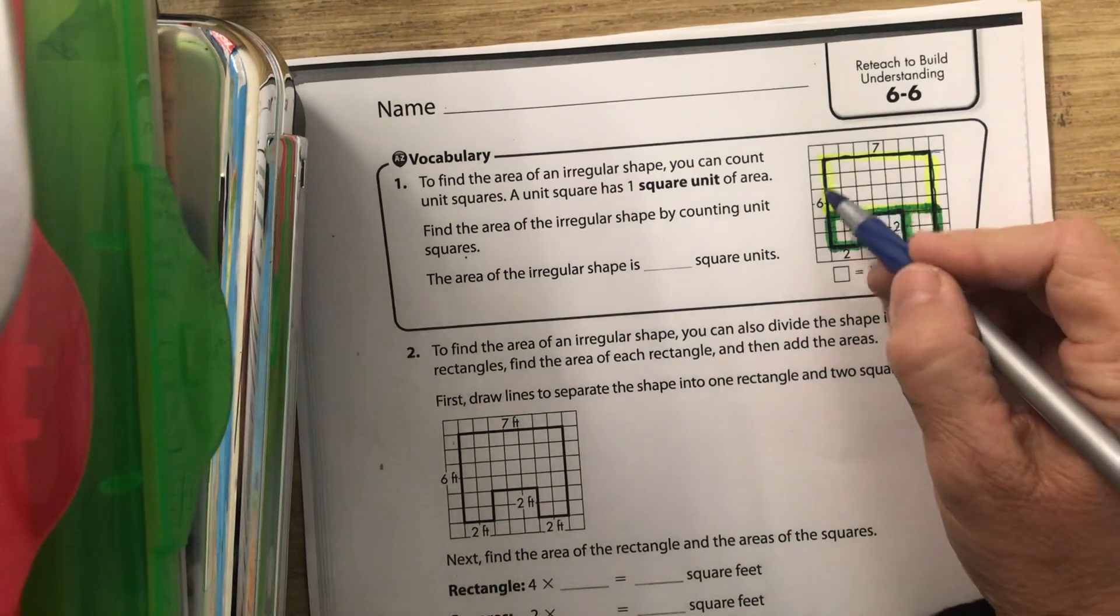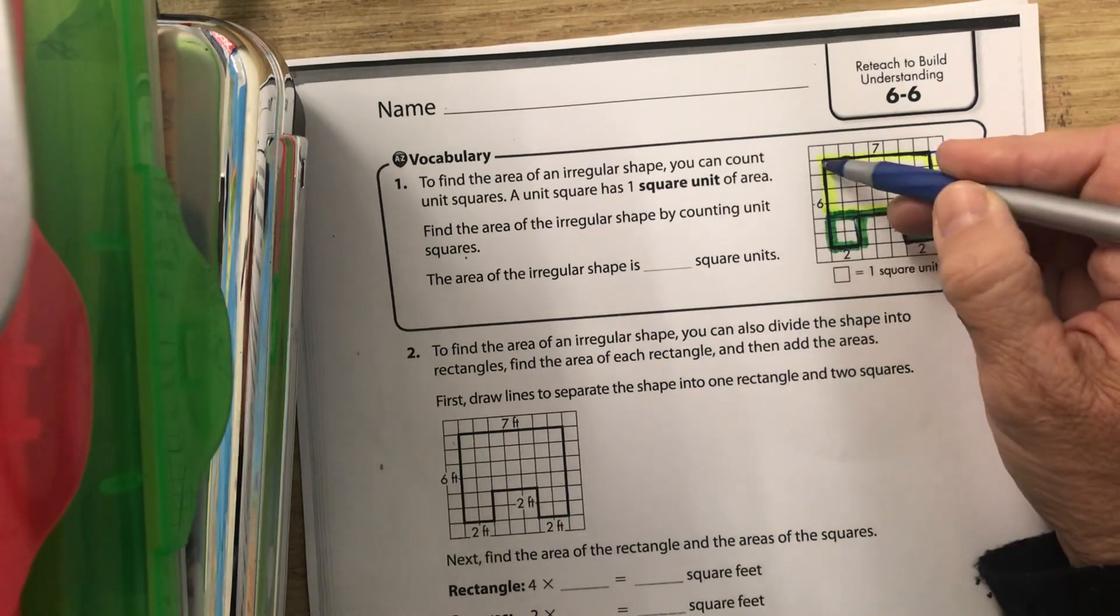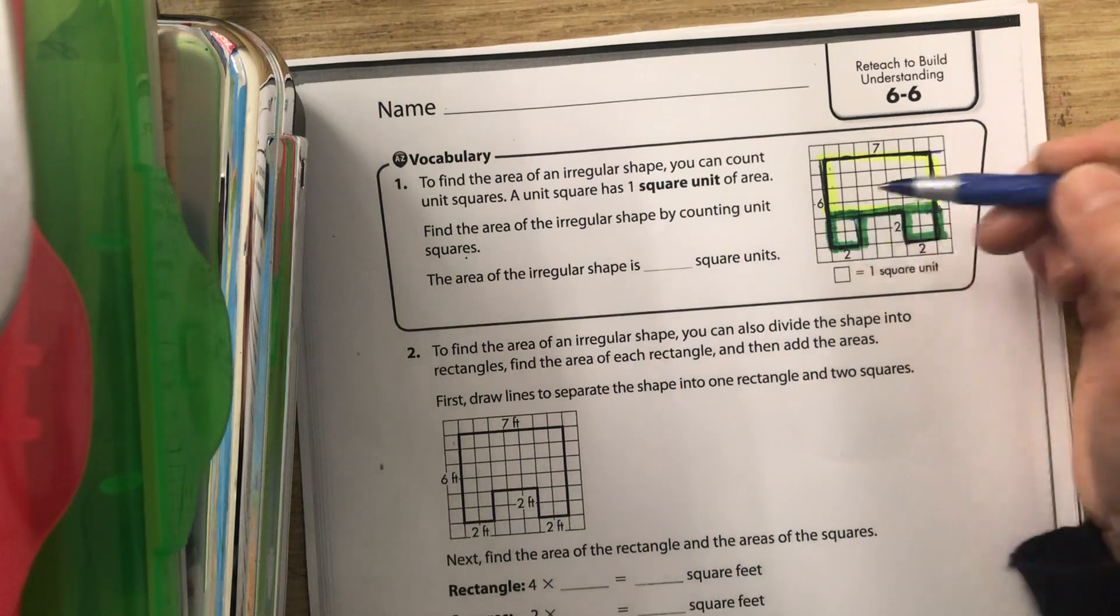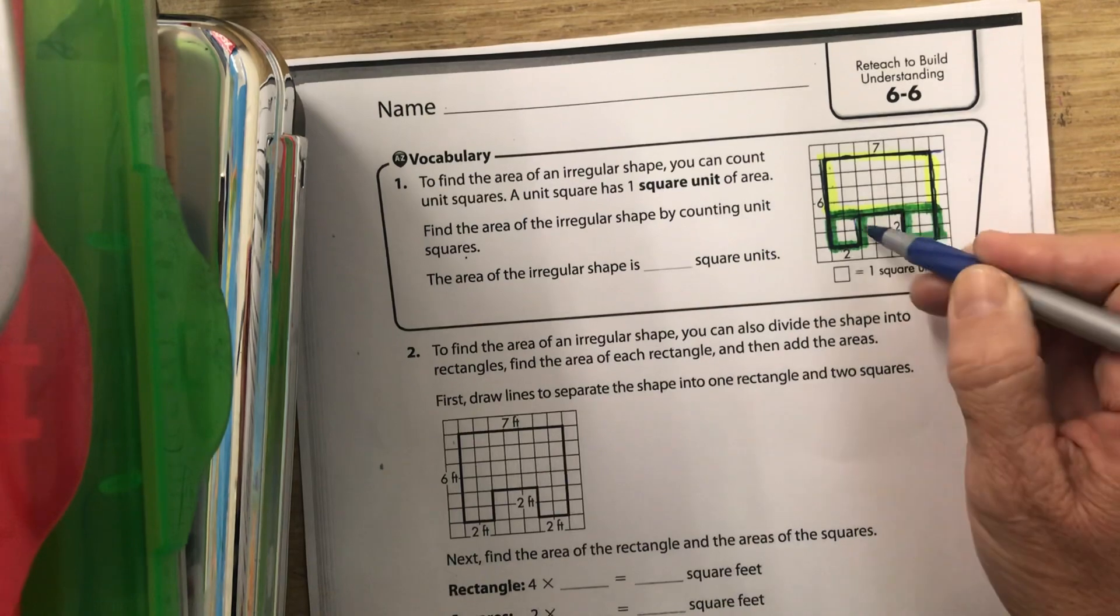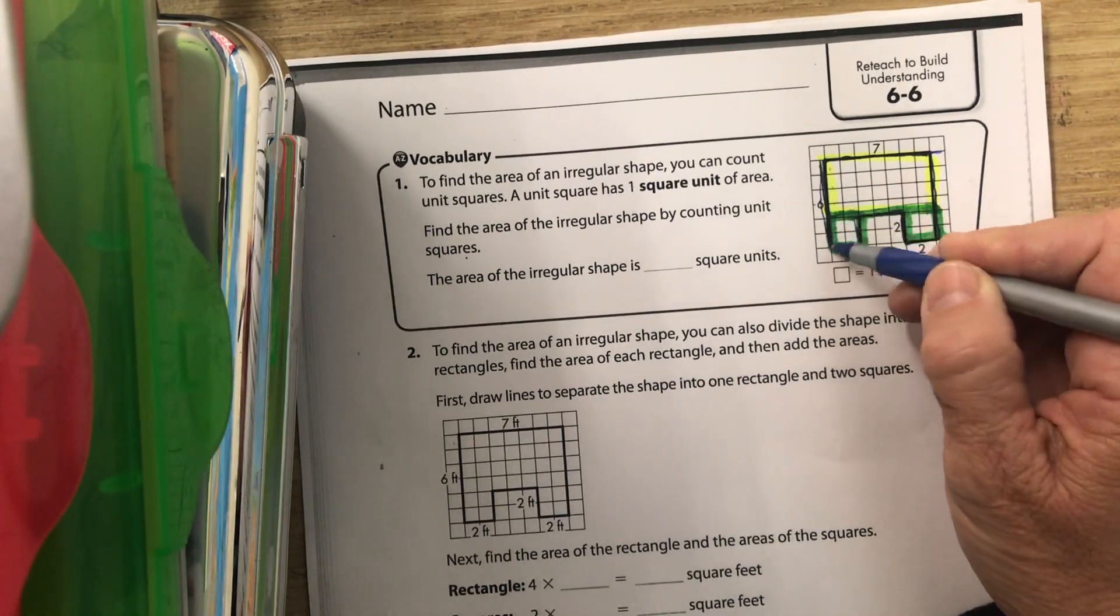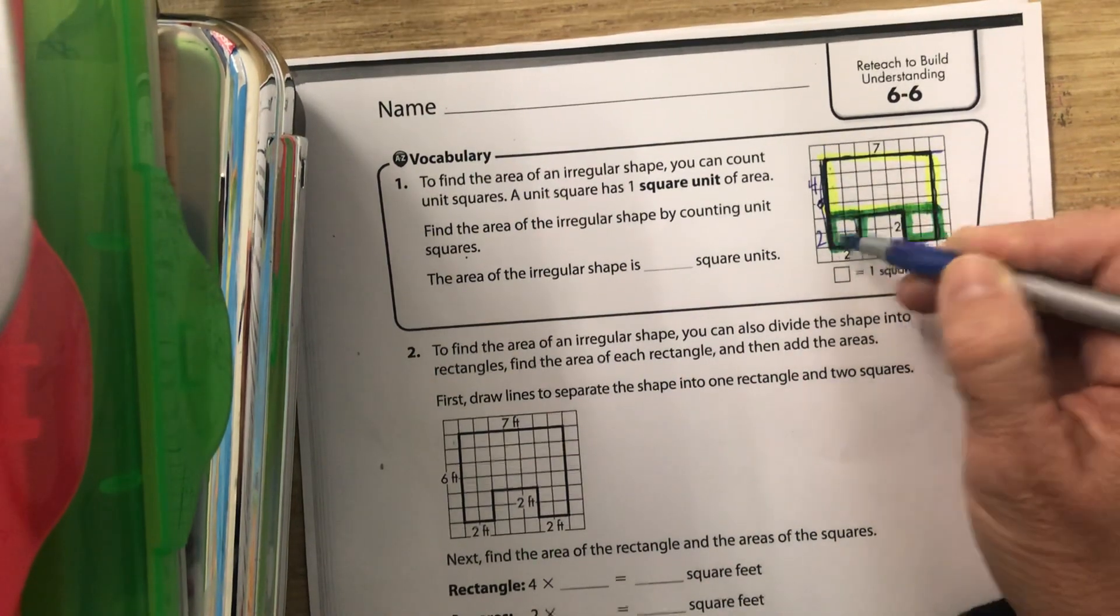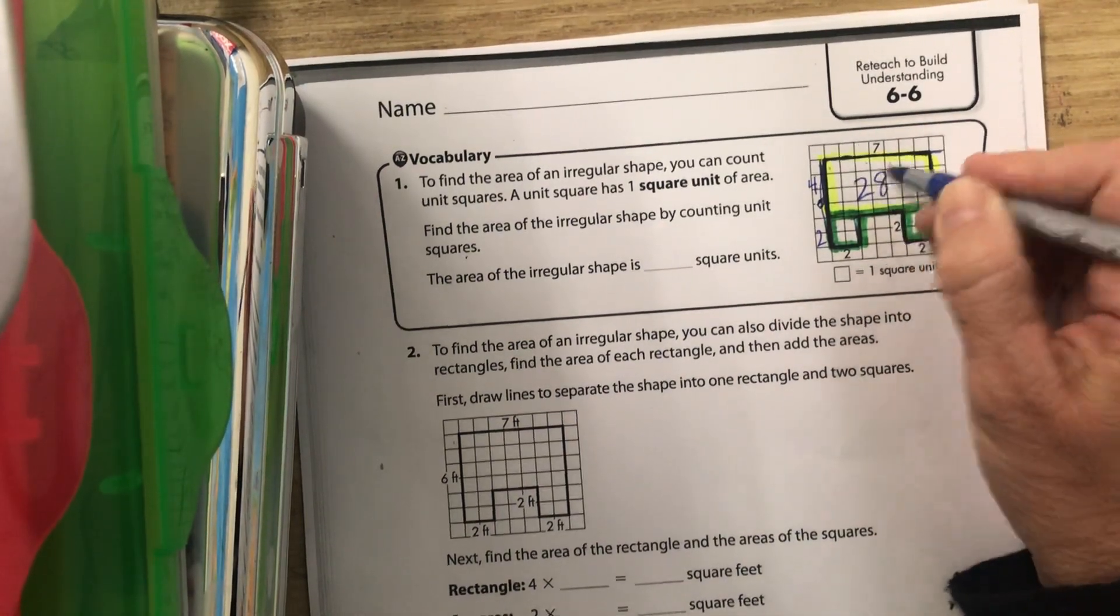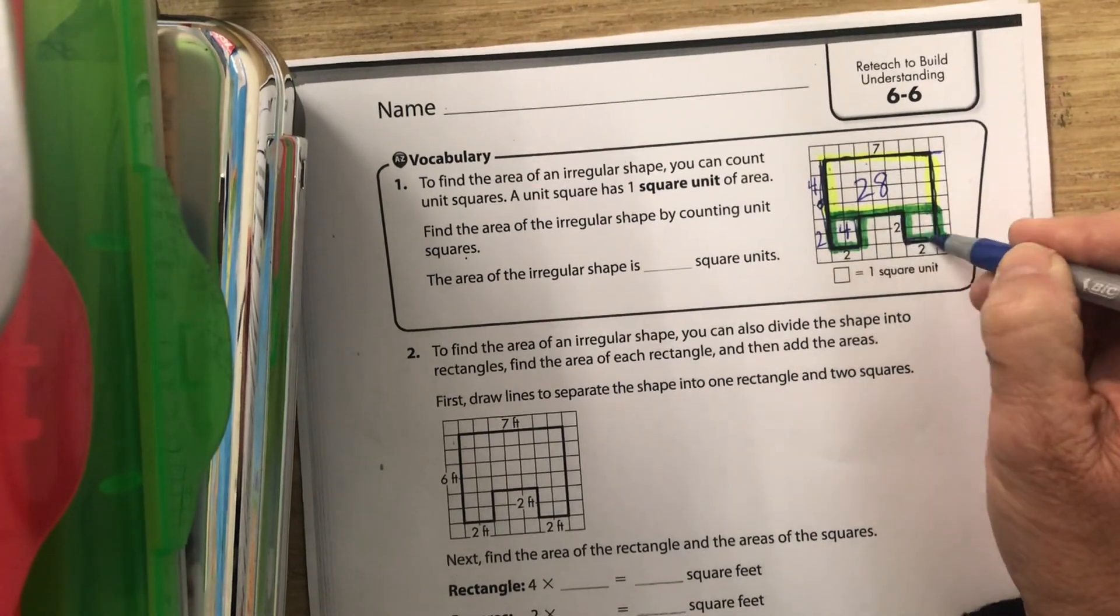We want to find the inside of the yellow part. We know this is seven across. This whole line right here is six: one, two, three, four, five, six. See how they tell us this line is two, which means this line is two. If we know this whole line is six, this is two and this is four. Four plus two equals that whole line of six. So four times seven equals 28.